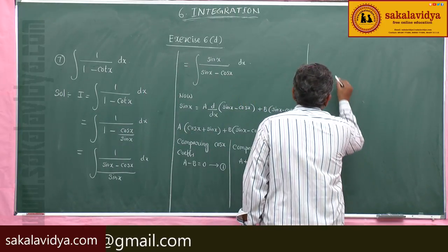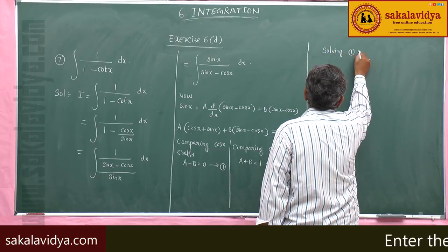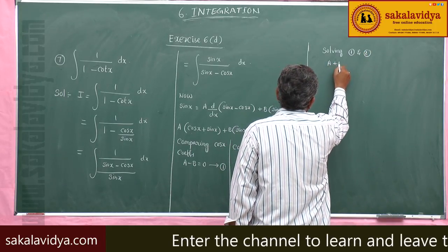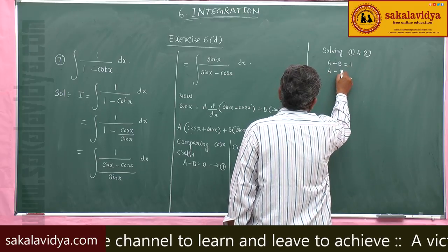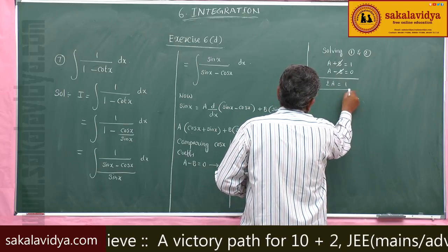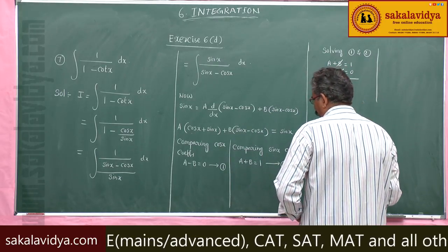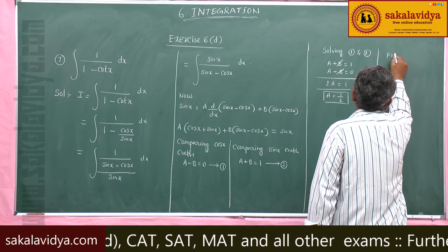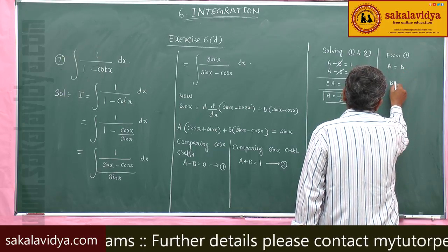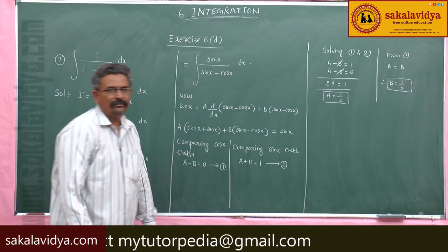Now let us solve equations 1 and 2. Adding A + B = 1 and A - B = 0, we get 2A = 1, so A = 1/2. From equation 1, A equals B, therefore B is also 1/2.